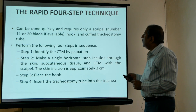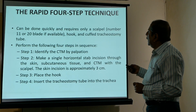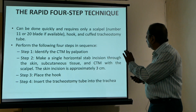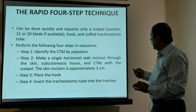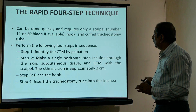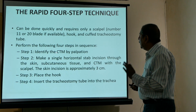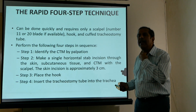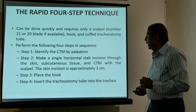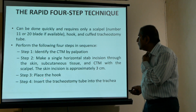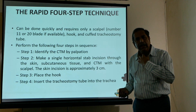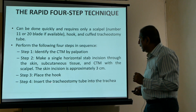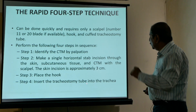Another technique is the rapid four-step technique, which requires only four items: one blade, a hook, a cuffed tracheal tube, and a dilator. Step one: identify the cricothyroid membrane. Step two: make a single horizontal stab incision. Step three: place the hook below the cricoid cartilage. Step four: insert the tracheostomy tube.